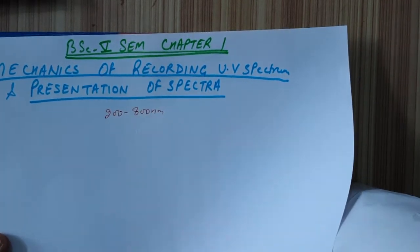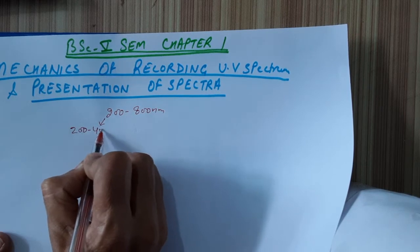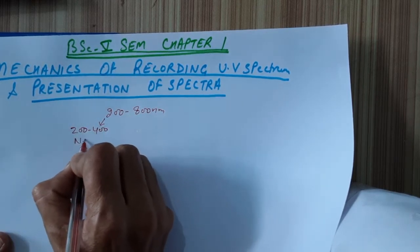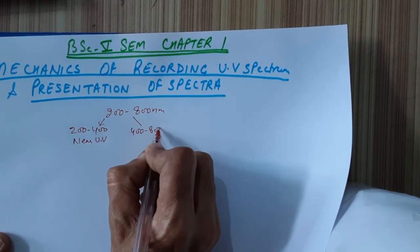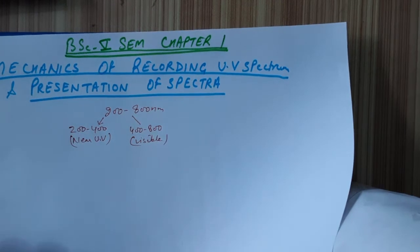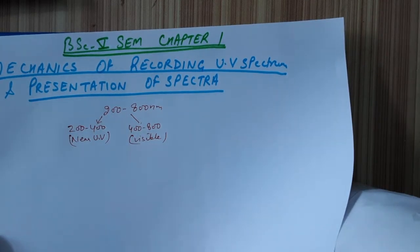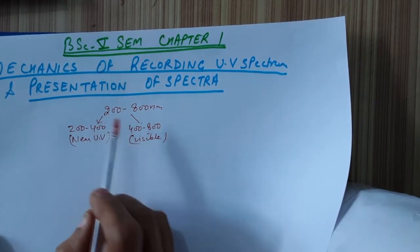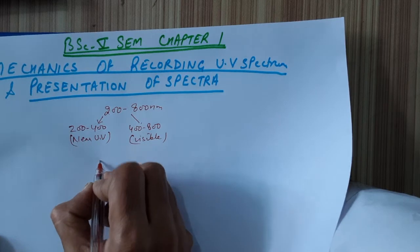From 200 to 400 nanometers this is called near ultraviolet, near UV, and from 400 to 800 nanometers this is called the visible region. Common ultraviolet spectrometers record spectra in the range of 200 to 800 nanometers; below 200 nanometers they will not work.